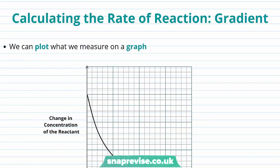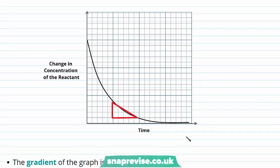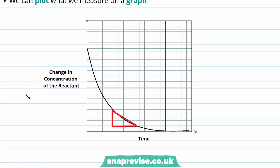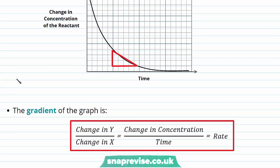In order to measure the rate of reaction we need to measure the gradient of our graph. The gradient of the graph is calculated by the change in y divided by the change in x. On this graph, the change in y represents the change in concentration and the change in x the change in time. Since change in concentration divided by time equals rate, the gradient of our graph gives us an indication of the rate of the reaction.